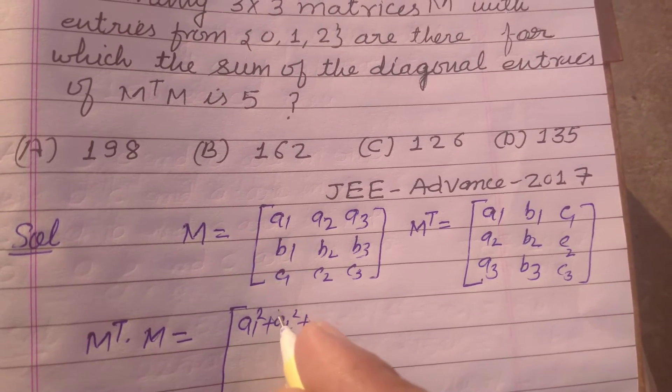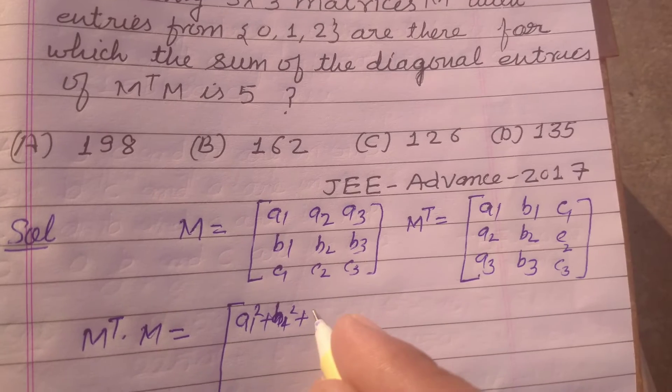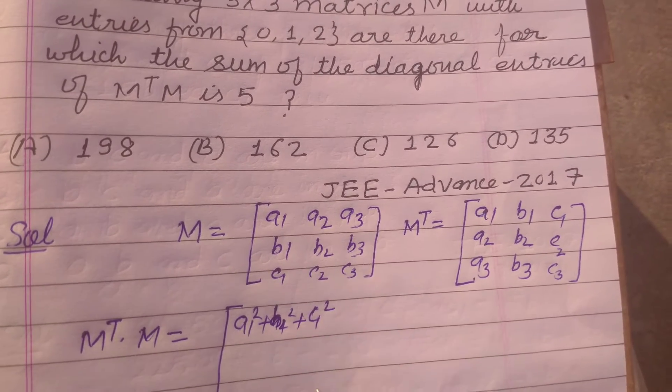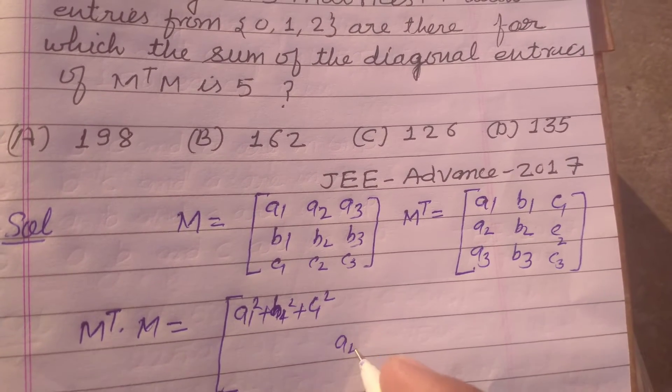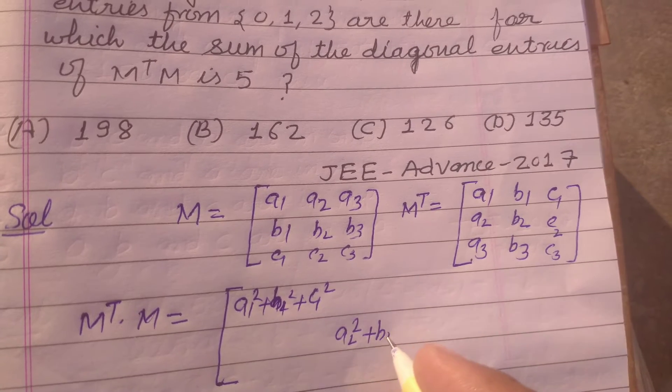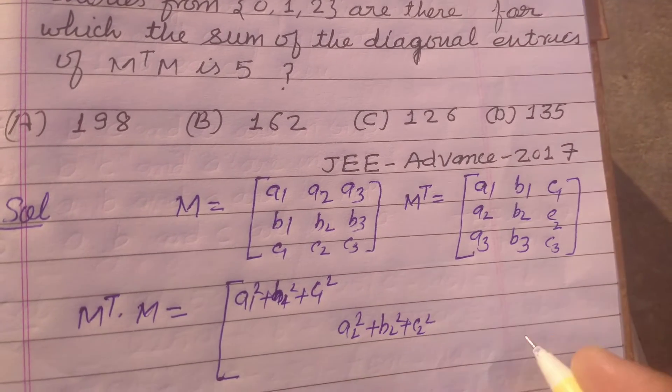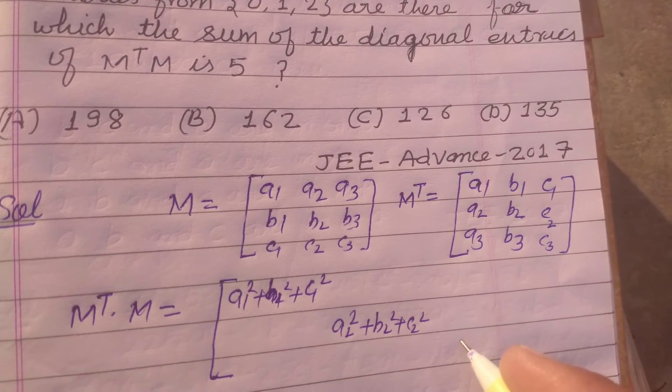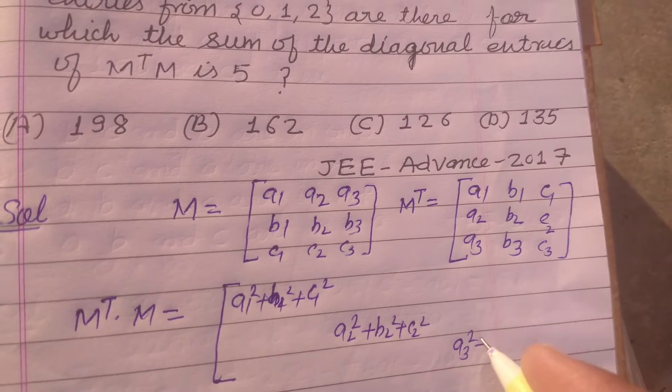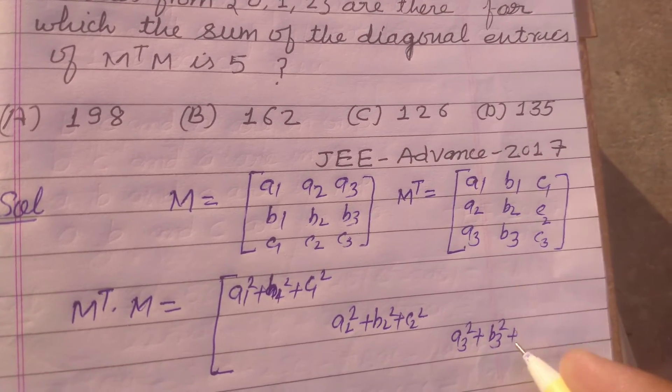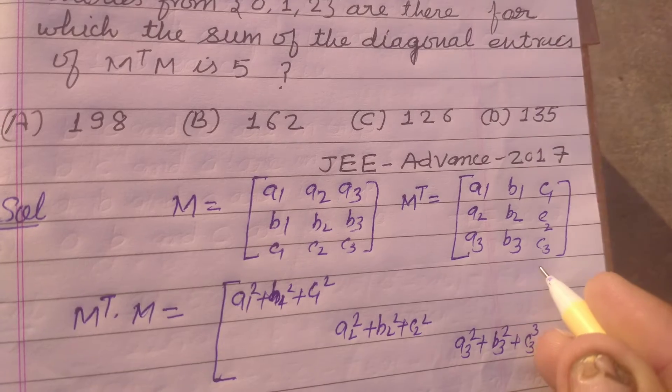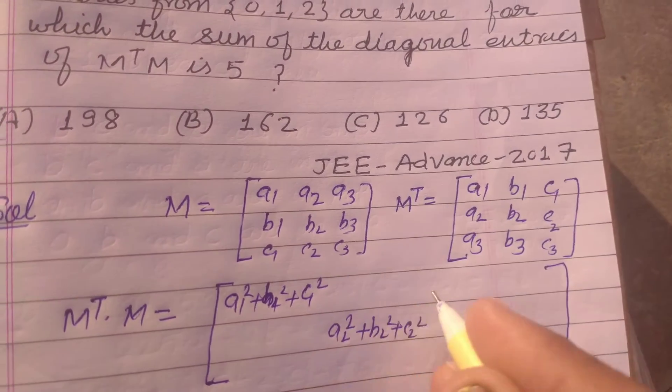And on multiplication of this MT into M we got the diagonal entries: A1 square, A2 square, B1 square, C1 square, A2 square, B2 square, C2 square, and here A3 square, B3 square, C2 square and C3 square. So these are the diagonal entries when we multiply this.